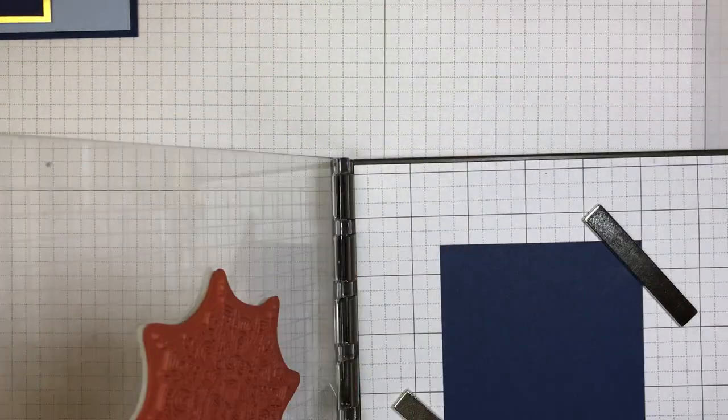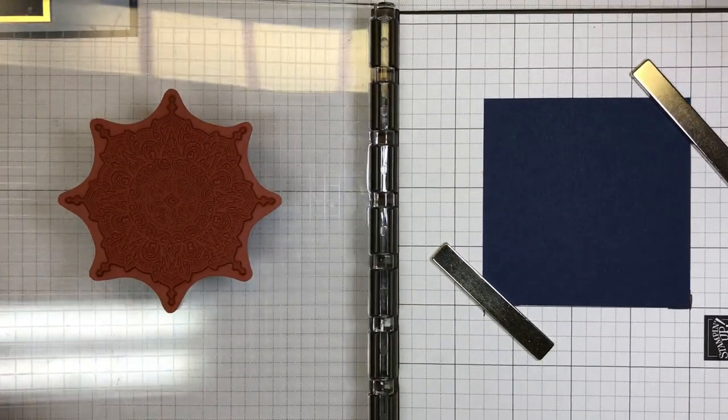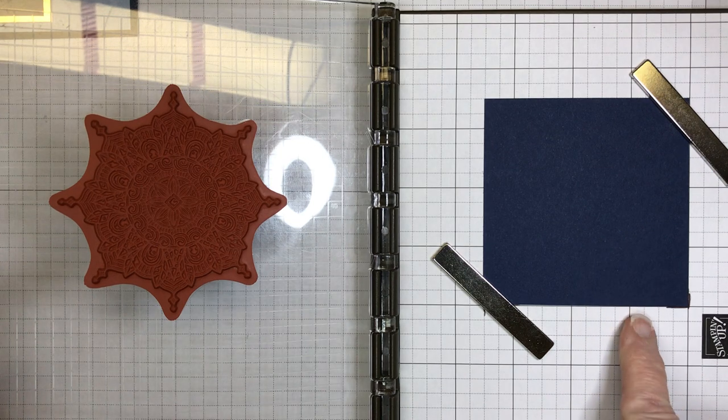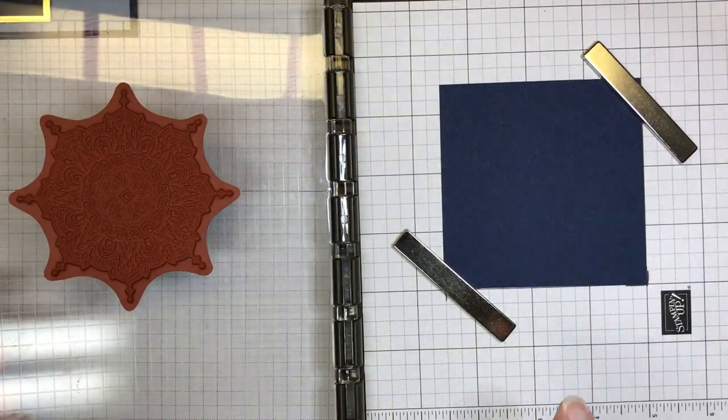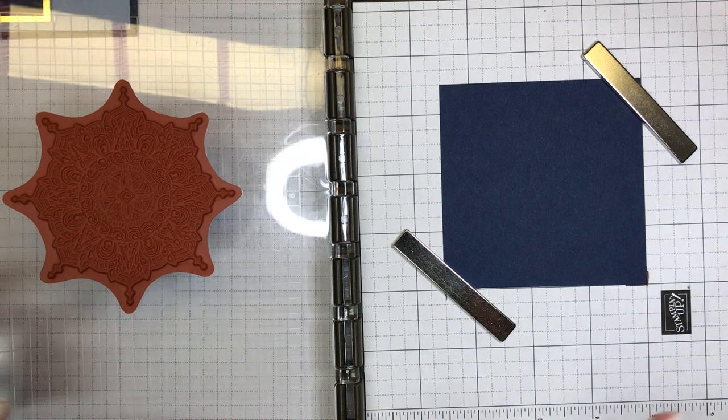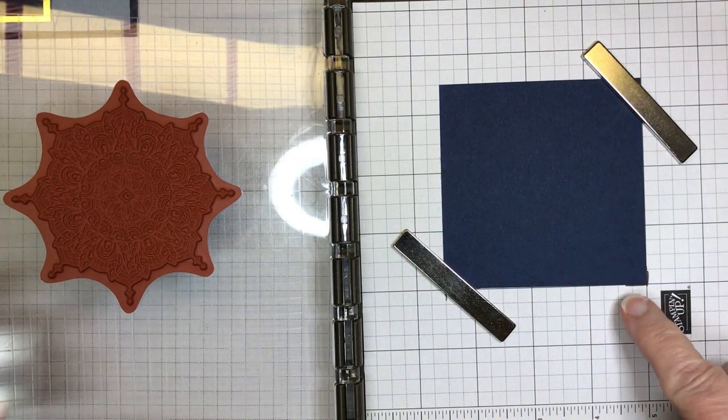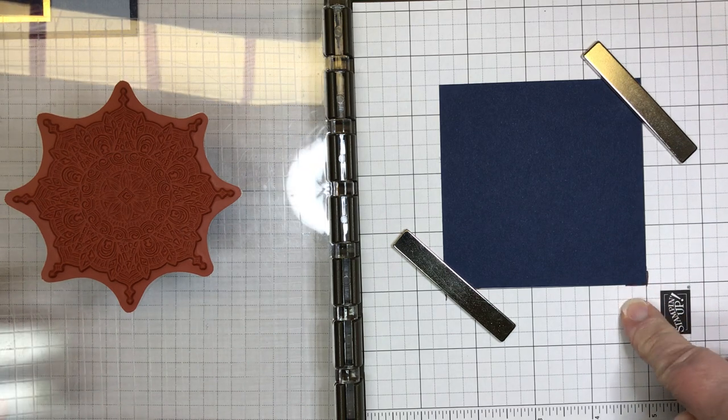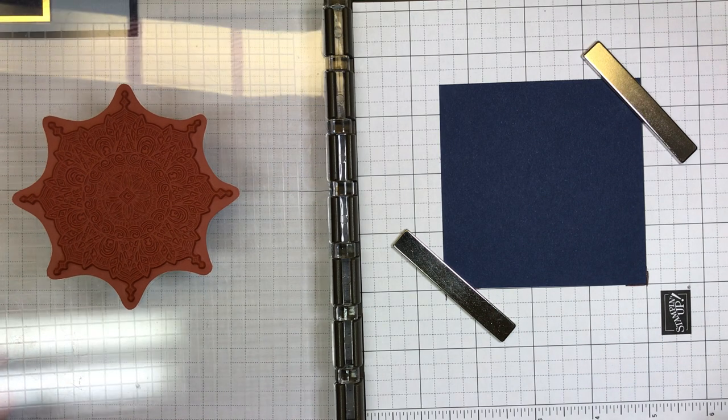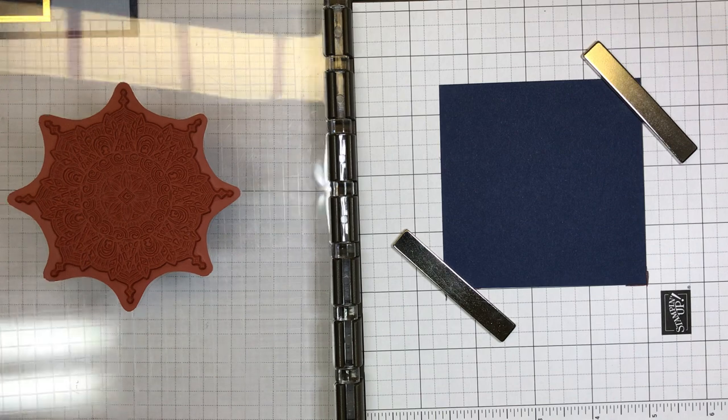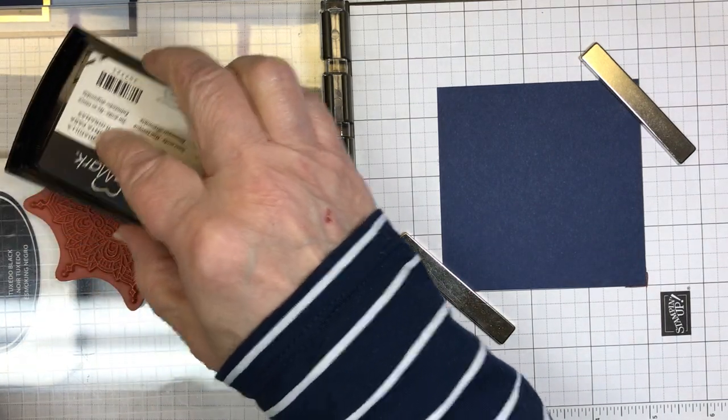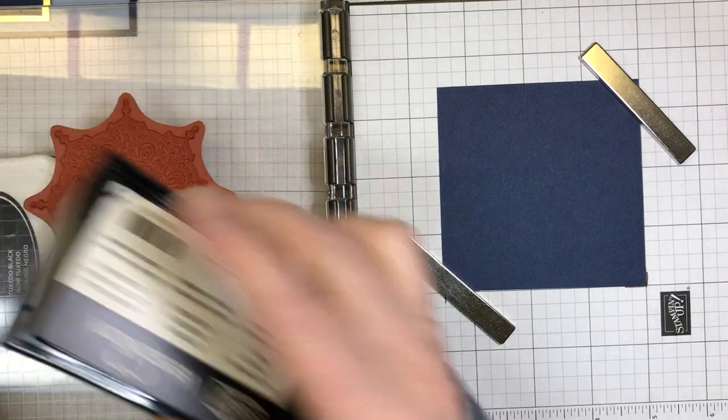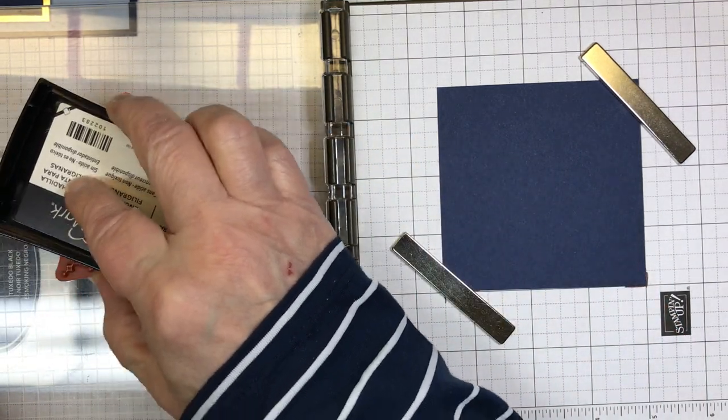So we're going to do the embossing. So I have that medallion image, sorry for the glare, on my stamparatus. All right, and I have a piece of Knight of Navy, and this is three and a half by three and a half. All right, now I've already set this up so that I have this way when I set this, I will have it stamped exactly the same because I'm going to need two of these squares of Knight of Navy, three and a half by three and a half for both of them. I have one already stamped and embossed so that you're not having to watch this twice. But this way, because of this technique, I wanted to be sure that I'm stamping in the same position on all the pieces of cardstock that I put in here.